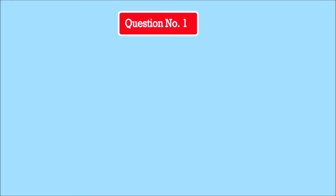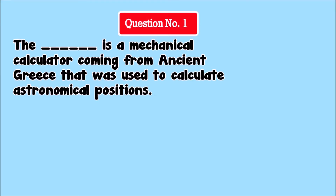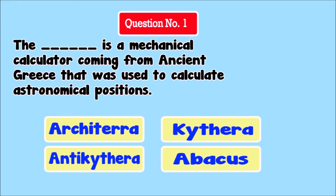Question number one. The blank is a mechanical calculator coming from ancient Greece that was used to calculate astronomical positions. Options: Archetera, Antikythera, Kithera, Abacus.